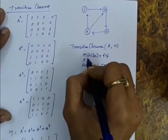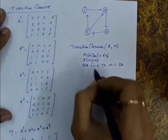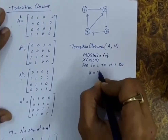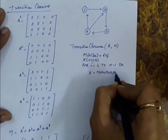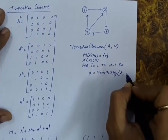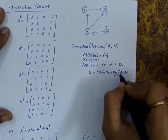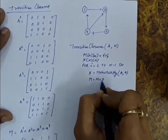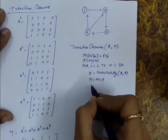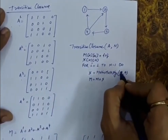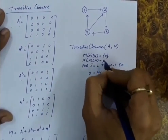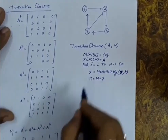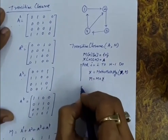We use an X matrix of the same size to store the matrix multiplication results. There is a matrix multiply function. Initially, X is set to A. We call matrix multiply with A and A to get A squared stored in X, then add X to M. Next iteration multiplies X (now A squared) with A to get A cubed, and so on. Whatever we compute is added to M.